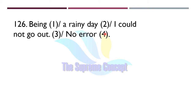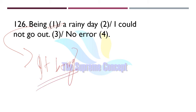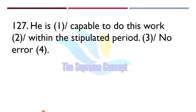Question 126: 'Being a rainy day, I could not go out.' Find out where the error lies. The error lies in part number one — instead of simply 'being,' we will use 'it being.' So 'It being a rainy day, I could not go out' is the correct answer, because it being completes the sentence with a common subject.